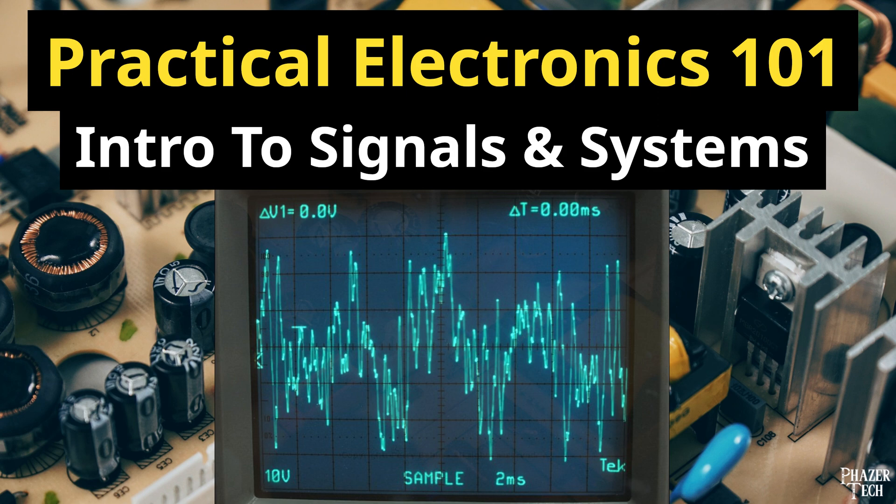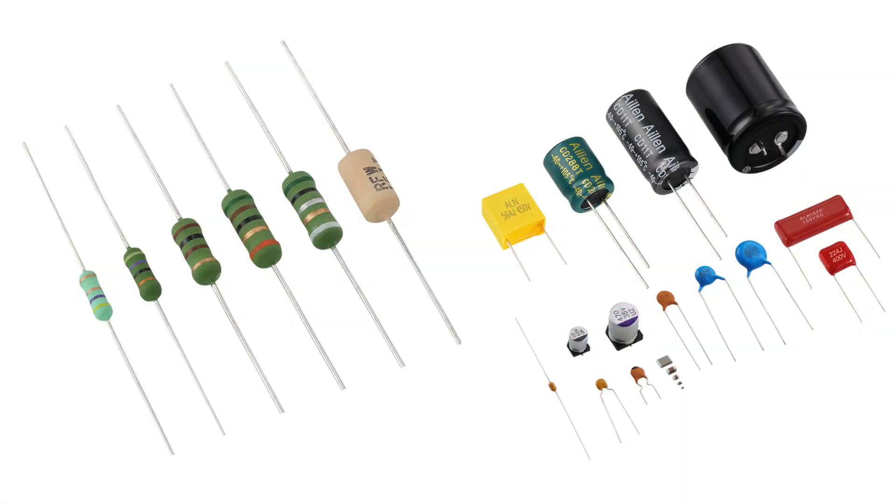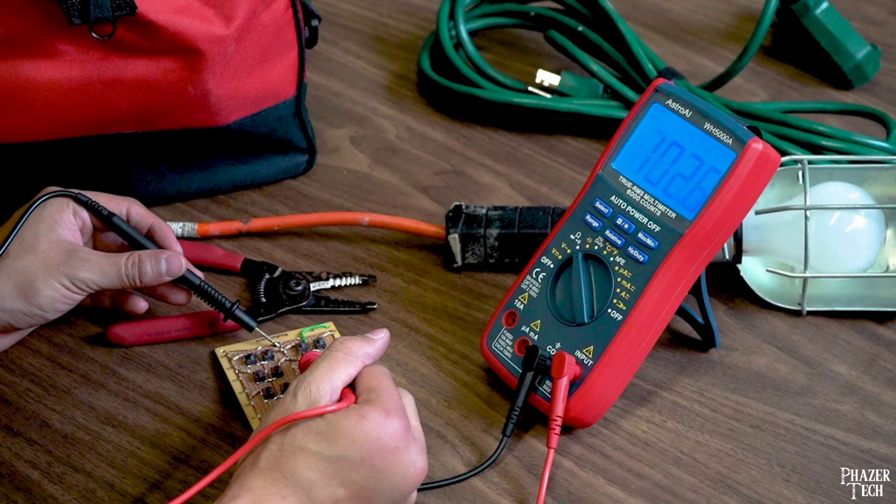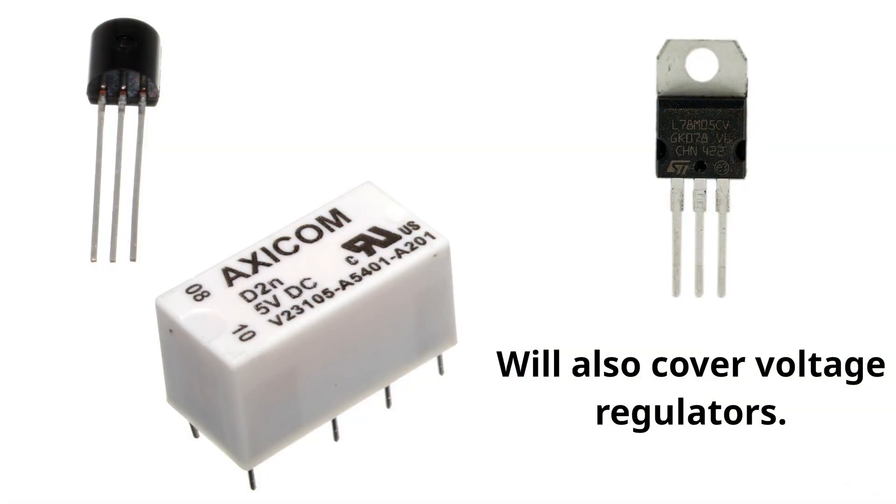Originally I was planning to talk about resistors and capacitors and how to use them when designing basic circuits. But after thinking about it, I decided it would actually be better to explain signals more in depth before moving on. So I'll be covering resistors and capacitors in my next video, and we'll also be showing how to properly use a multimeter. Then in the following video, I'll be explaining how to use transistors and relays, and at that point we'll be ready to apply this knowledge to actual projects.